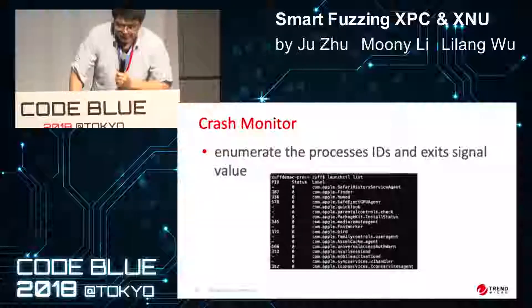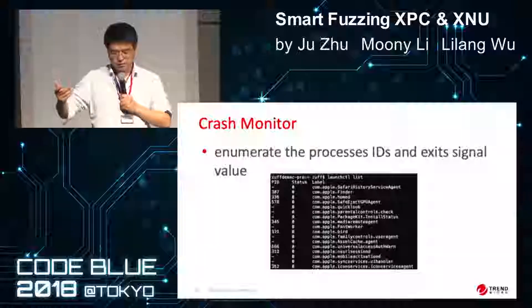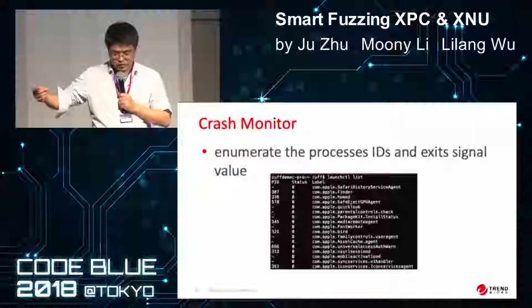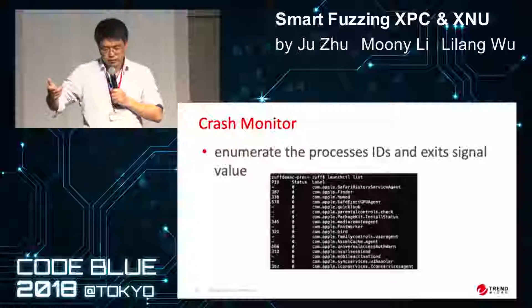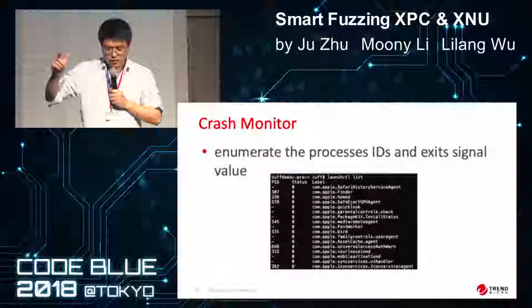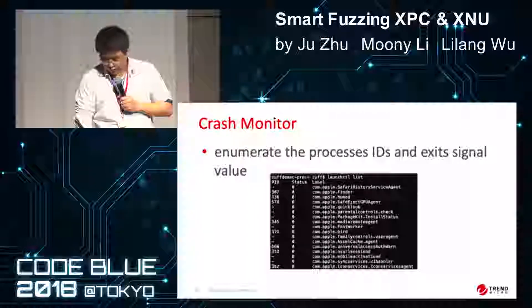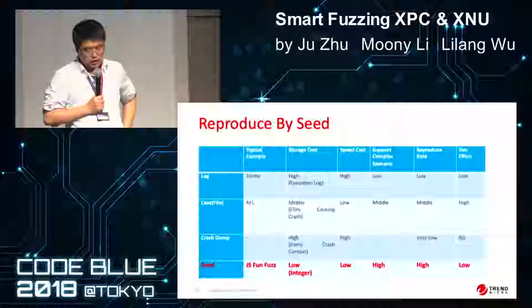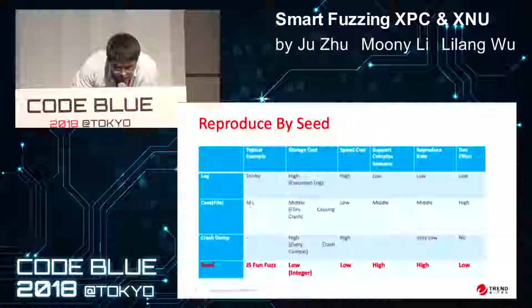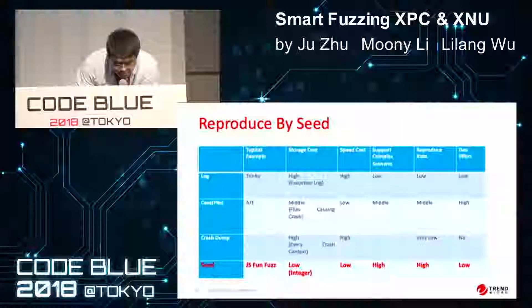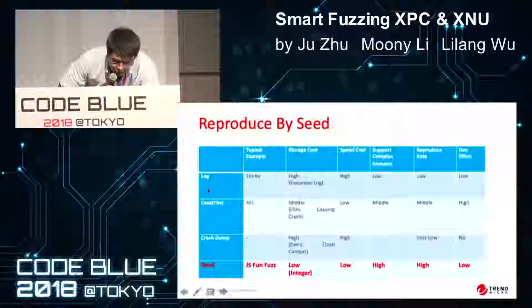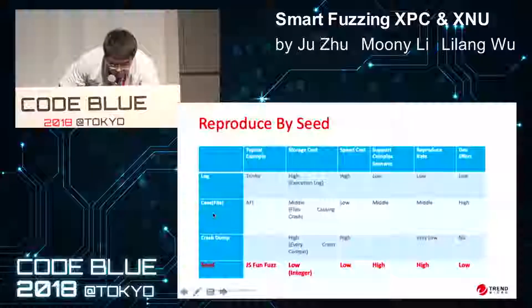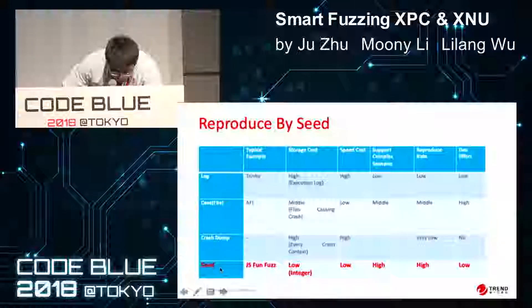As for the crash monitor, since our target is for user-mode services such as audio or video service, if the process crashes or hangs, we can get the signal — for example, the process may exit or the PID may change on restart. As for the reproduction thought, we can have different methodologies: the traditional one is for log traces, another is for case files or crash dumps, and the third one is for the seed.